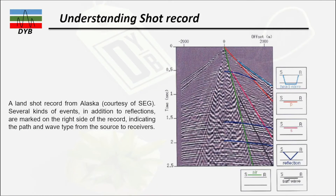Before applying any NMO corrections or noise removal, we need to understand the shot record — what it tells us and what events are present. This is an example of a shot record from land data from Alaska, courtesy of the SEG. This is a split-spread shooting geometry with receivers on both sides and the shot in the middle. Try to identify all the events recorded in this shot record.